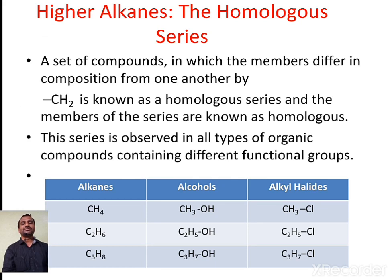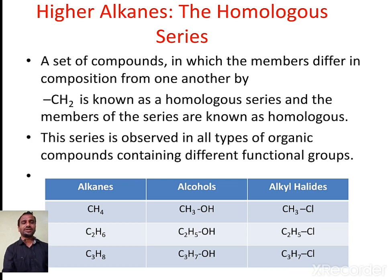Next we have to study what are higher alkanes and the homologous series. A set of compounds in which the members differ in composition from one another by a CH2 unit is known as a homologous series, and the members of the series are known as homologs. If in a family of organic compounds, two consecutive members differ by a CH2 unit, that series is called a homologous series.